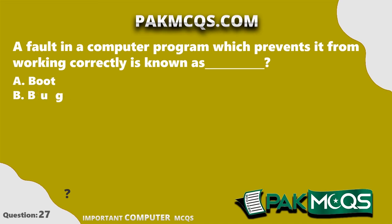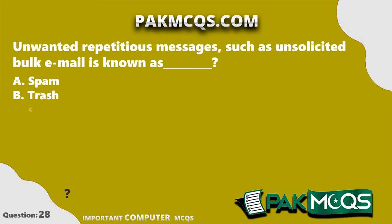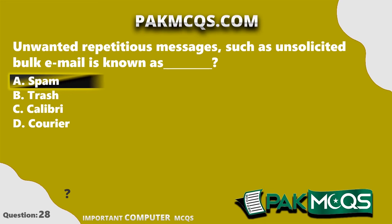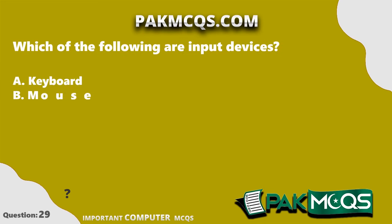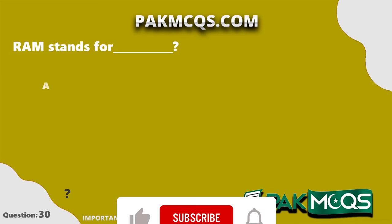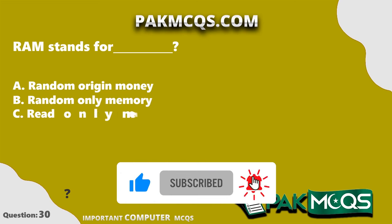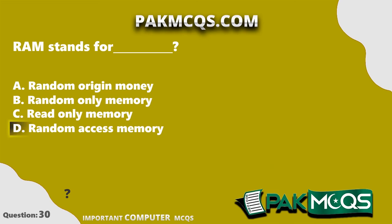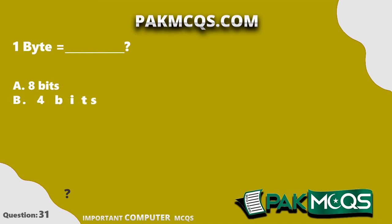A fault in a computer program which prevents it from working correctly is known as a bug. Unwanted repetitious messages such as unsolicited bulk email is known as spam. Keyboard, mouse, and card reader are all input devices. RAM stands for Random Access Memory. One byte is equal to 8 bits.